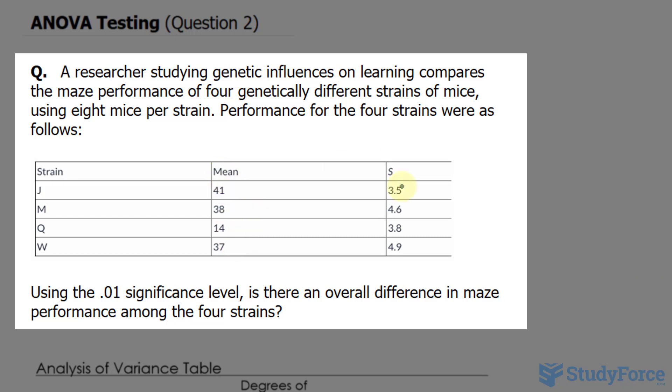Notice that we've been given the mean and standard deviation in those two columns. Using the 0.1 significance level, is there an overall difference in maze performance among the four strains?